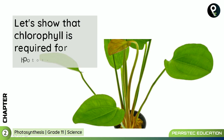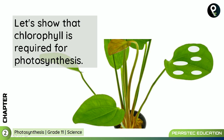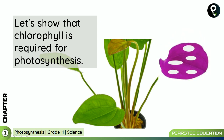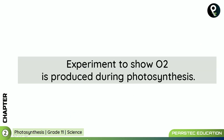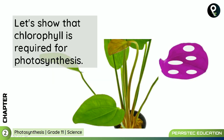Now let's show that chlorophyll is required for photosynthesis. It is a very simple experiment. We take some white color paper patches, put circles on the leaf, and keep it under sunlight, then perform the starch test. The white color area did not undergo photosynthesis, which shows that chlorophyll is also required for photosynthesis.